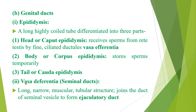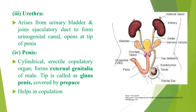The next genital duct is the vasa deferentia, also called seminal ducts — long, narrow, muscular, tubular structures that join the ducts of the seminal vesicles to form the ejaculatory ducts. The function of the vasa deferentia is to conduct sperms by peristalsis to the urethra.